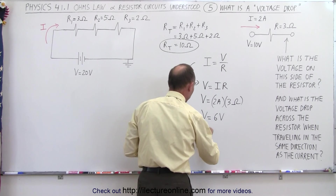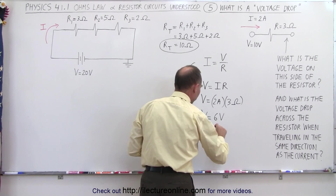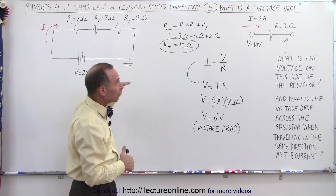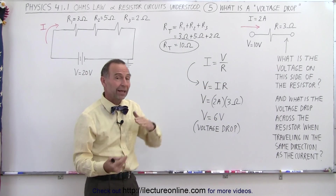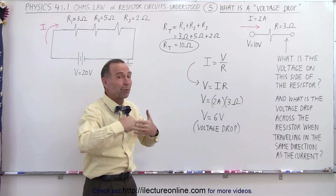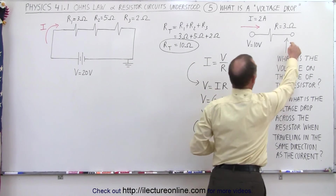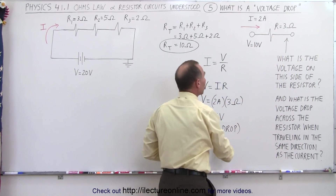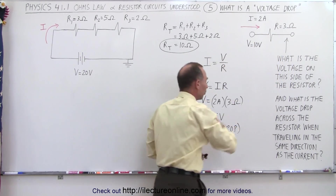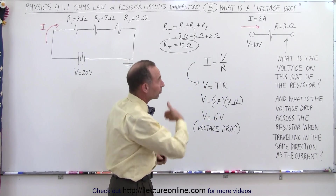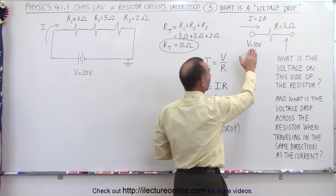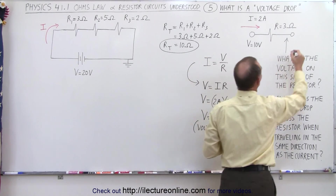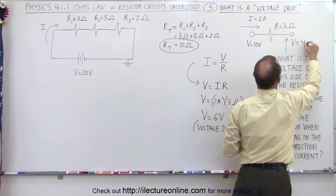This 6 volts is considered the voltage drop across the resistor. It's only a voltage drop if we travel in the same direction as the current. Traveling in the opposite direction gives us a voltage rise. So what is the voltage on the other side? We started with 10 volts and had a 6 volt drop, so the voltage on the other side will be 4 volts.